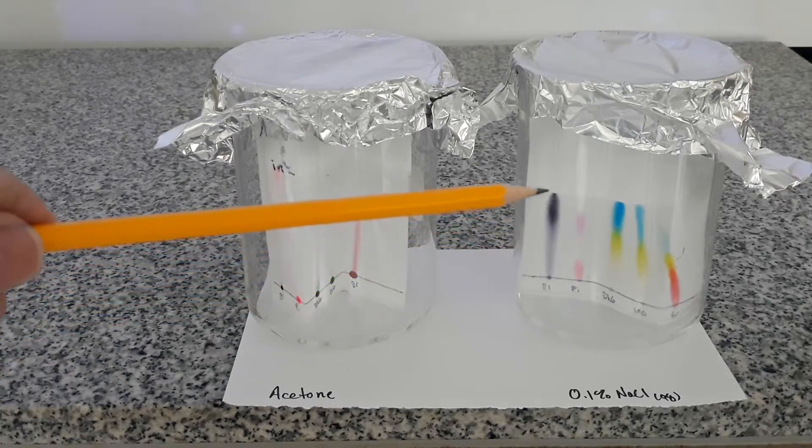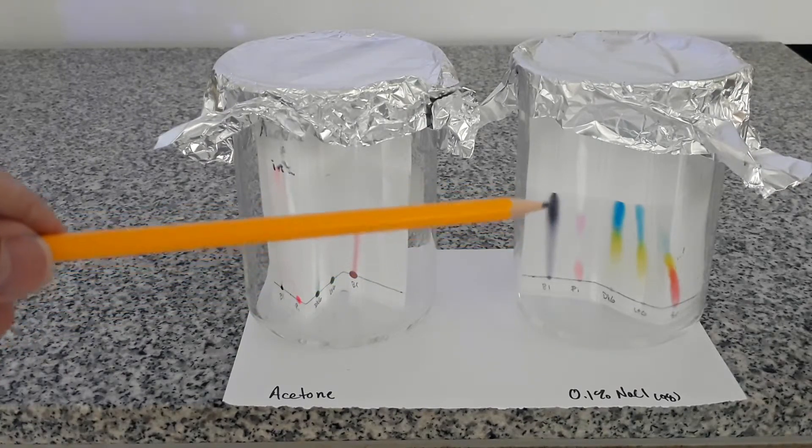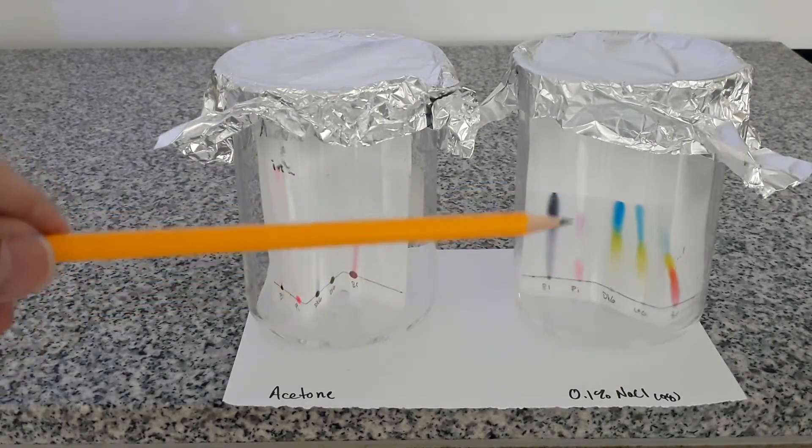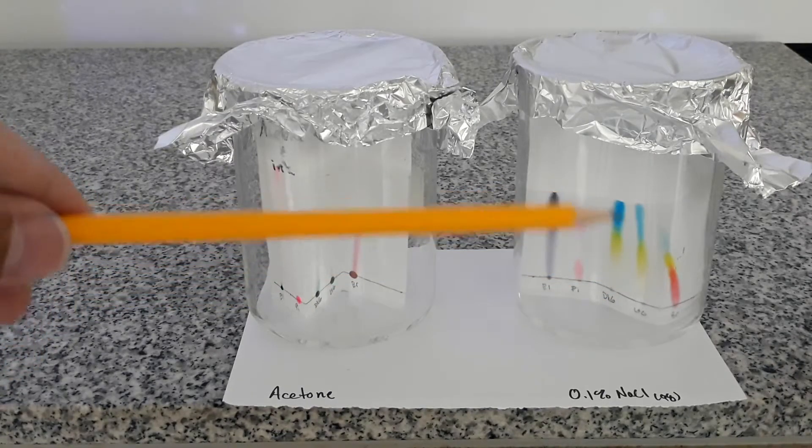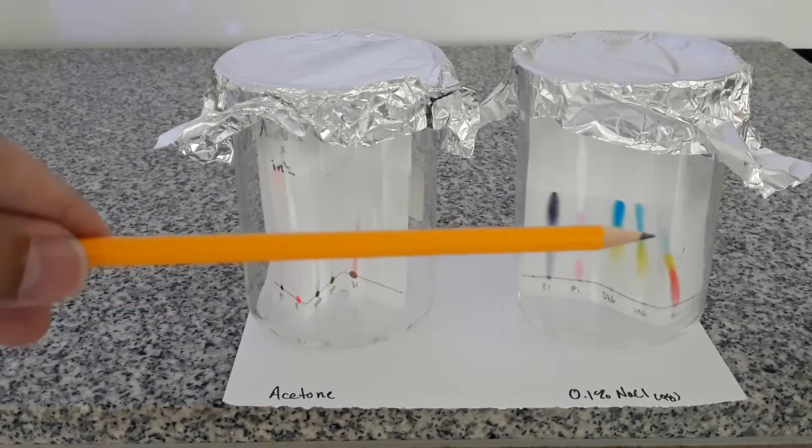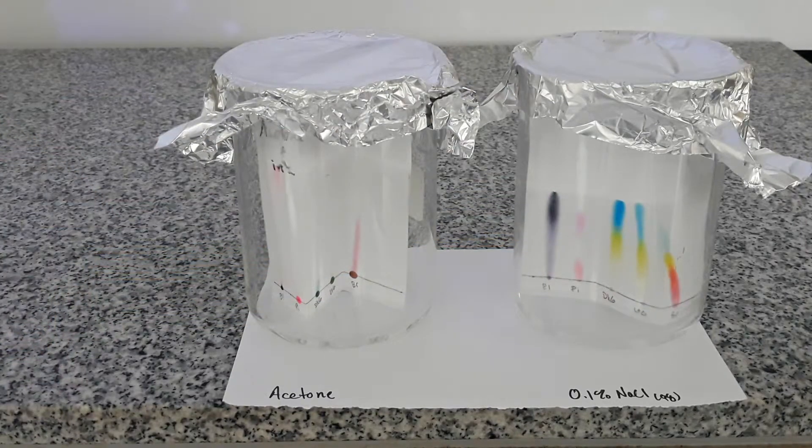We can see we're getting some nice separation here. The acetone separated fewer inks but we have some colors separated there and the sodium chloride has some really nice color separation between the different components of each of the pigments.